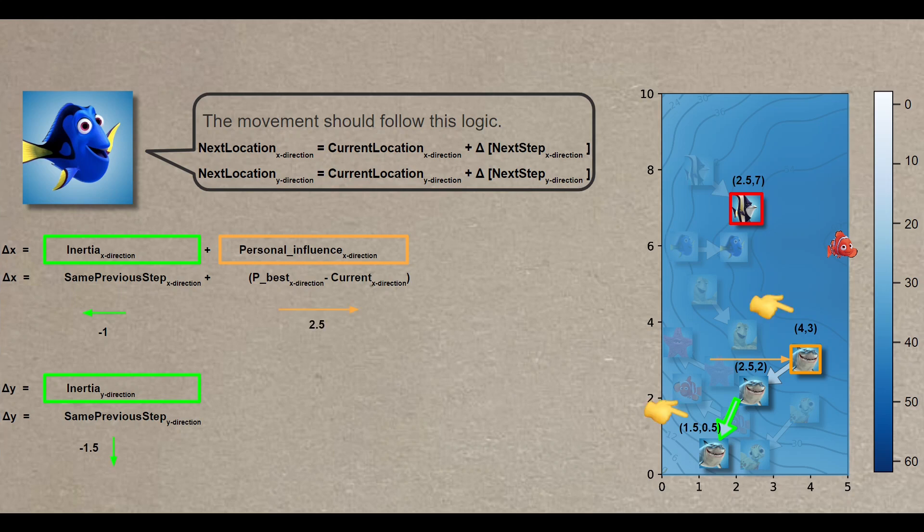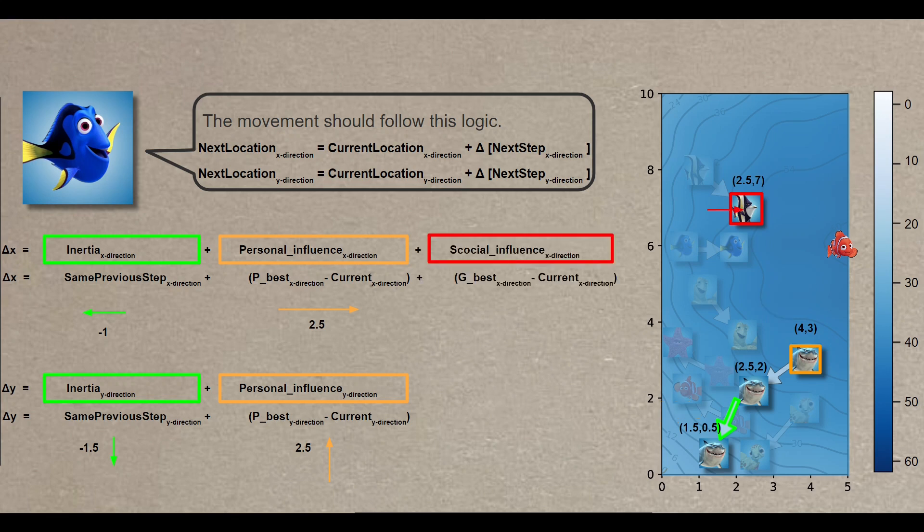This is quantified by finding the difference between the best location, the orange square, and your current location, which amounts to 4 minus 1.5 equals 2.5 to the right. Similarly, in the y direction, it's 3 minus 0.5 equals 2.5 upwards. The third and final component is the social influence, highlighted in red.